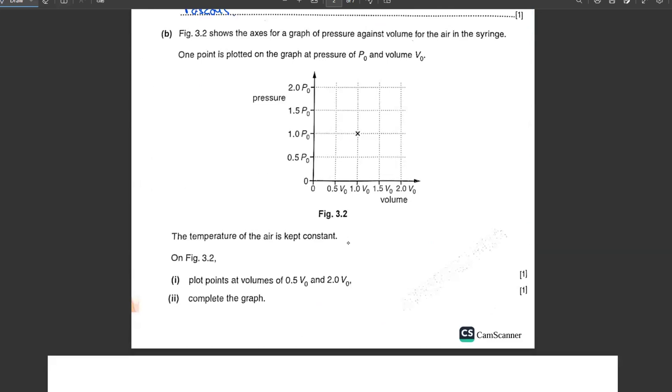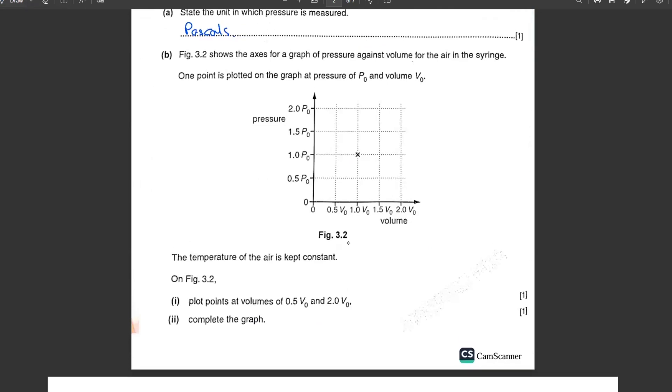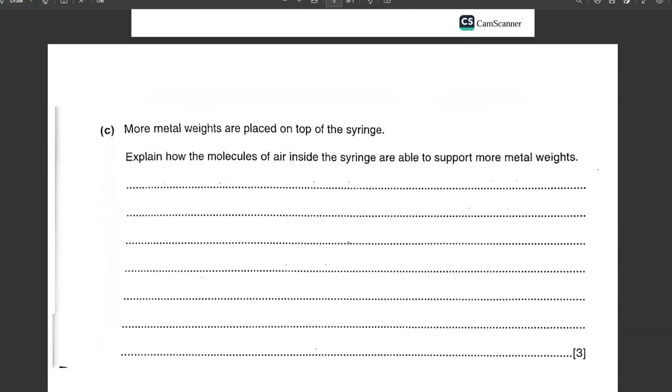Figure 3.2 shows the axis for a graph of pressure against volume for the air in the syringe. One point is already plotted at pressure P0 and volume V0. If the pressure doubles, the volume will halve. If the volume doubles, the pressure will halve. So you can draw a graph like this.